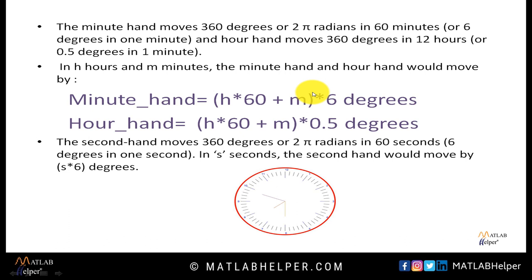Now coming to the hour hand. We convert h hours into minutes by multiplying with 60 plus m minutes, and as the hour hand covers 0.5 degrees in 1 minute, we multiply it with 0.5. Now coming to the second hand — as the second hand moves 360 degrees or 2π radians in 60 seconds, that implies the second hand moves 6 degrees in 1 second. So in s seconds, the second hand would move by s × 6 degrees.